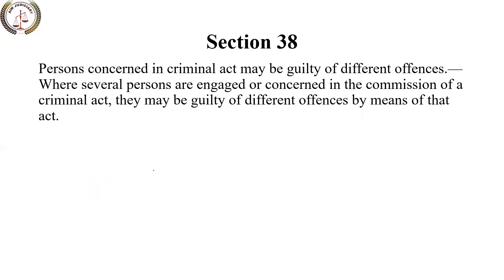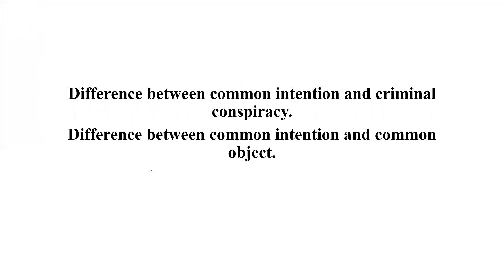Now Section 38: when dealing with Sections 34, 35, and 37 where many people are guilty, it may be that different persons committed one or different offenses. They may have the same or different intentions, so the main offense and its extent may vary per person. Section 38 is relatively simple. An important topic that remains is the difference between common intention and common object — which we will discuss when we cover Sections 120A and 149 regarding common object.